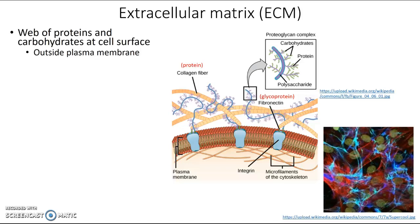One of the cool things we can do in biology is use fluorescent stains to mark different parts of cells and then look at them under the microscope. In this image, the goldish blobs are the nuclei of individual cells, the red parts are the cytoskeletal fibers, and all of the blue stuff is extracellular matrix. You can see it's this weird web-like structure of all these different molecules outside of the cell.